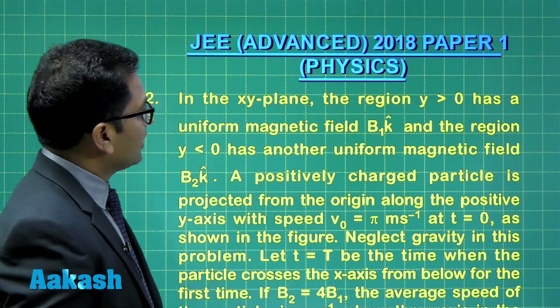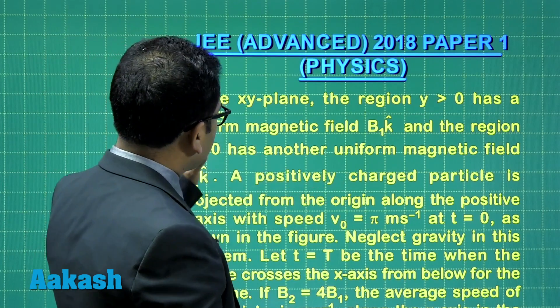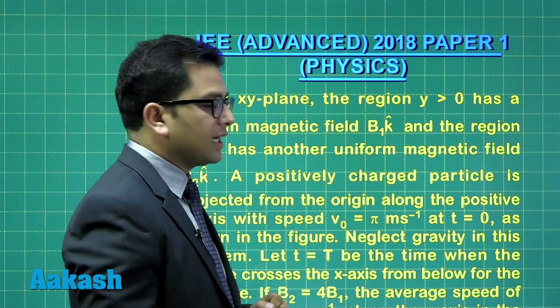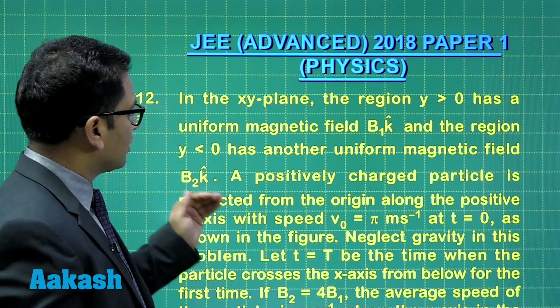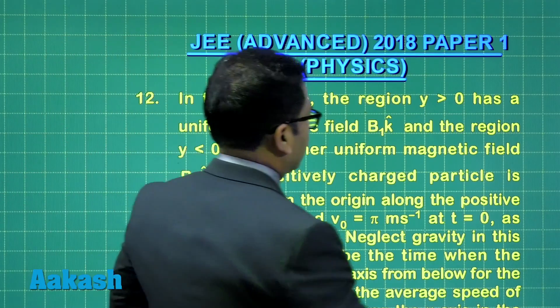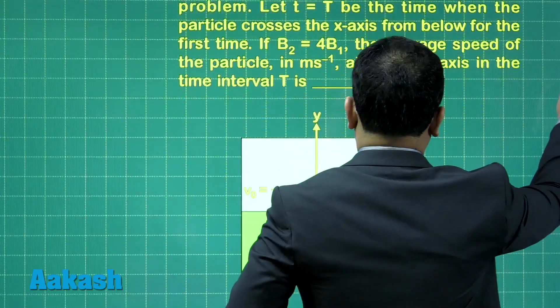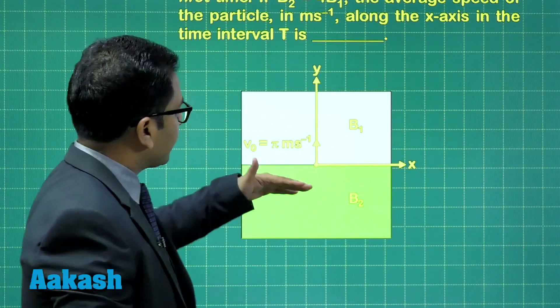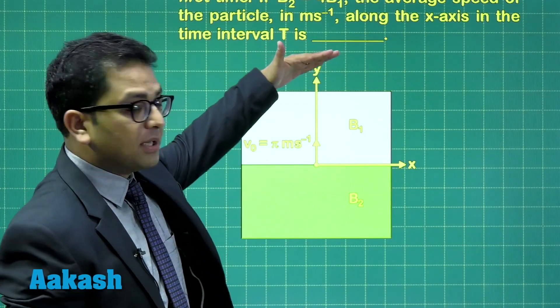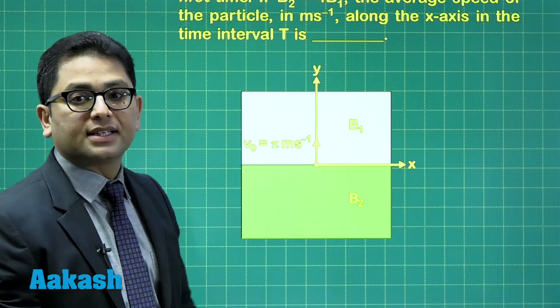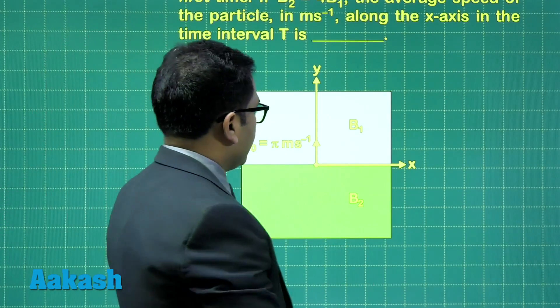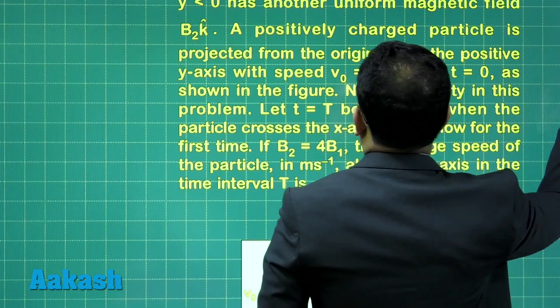In the xy plane, the region y greater than 0 has a uniform magnetic field B1k cap. And the region y less than 0 has another uniform magnetic field B2k cap. So, here, the figure is something like this. The region y greater than 0 is this, B1k cap. The region y less than 0 entire is B2k cap. And further, let's see what is the question.